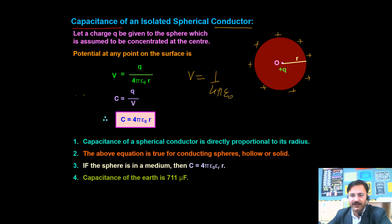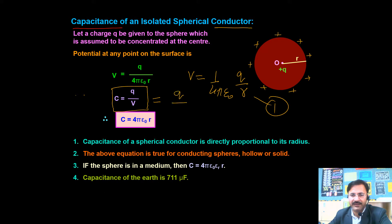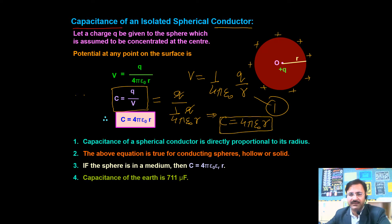From the basic definition of capacitance, C = Q/V. Substituting the value of V = 1/(4πε₀) × Q/R into this formula, Q and Q cancel, and the final result you obtain is C = 4πε₀R. So that is the formula for the capacitance of a spherical capacitor. Remember that this capacitance depends on some parameters: first, the size; second, the medium.